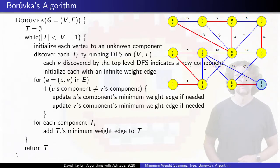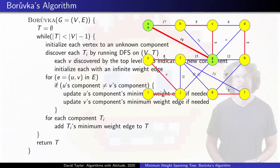After that, if you still have more than one tree in your forest, you reset your components and run another phase. That's it, pretty simple.